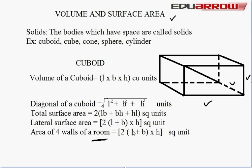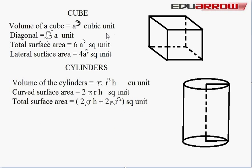Now we discuss about cube. A cube is a body which all sides are equal and perpendicular to each other. Suppose one side is A centimeter. The volume of the cube is A³ cubic unit. The diagonal of the cube is equal to √3 · A unit. Total surface area is equal to 6A² square unit. Lateral surface area is equal to 4A² square unit.